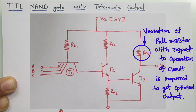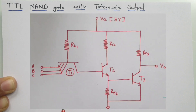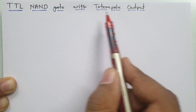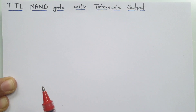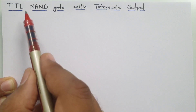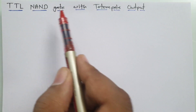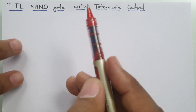By having that totem pole output, we will be able to configure variable resistance at the output side. I'll explain this step by step in the working of the TTL NAND gate with totem pole output. So let us look at the circuit first.